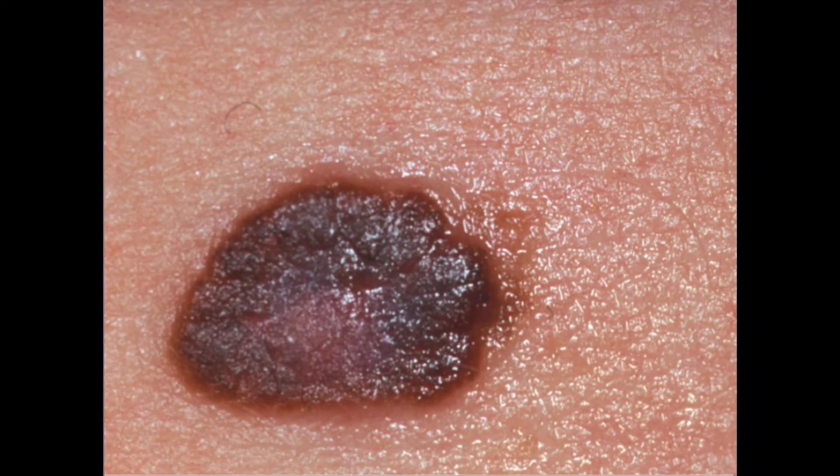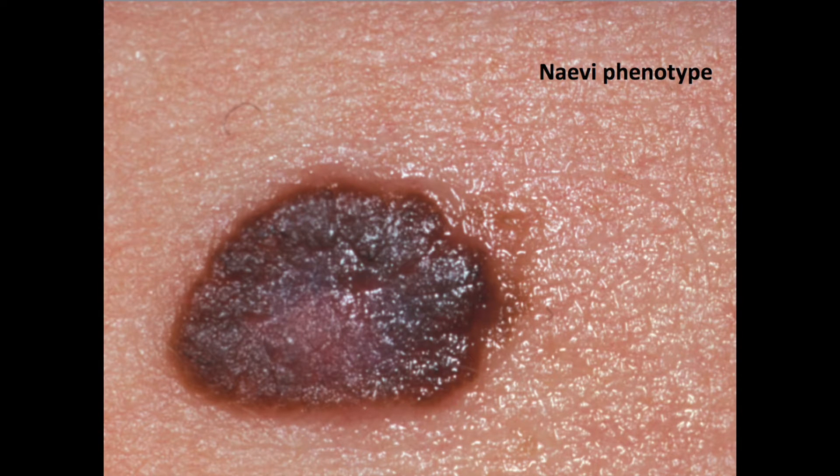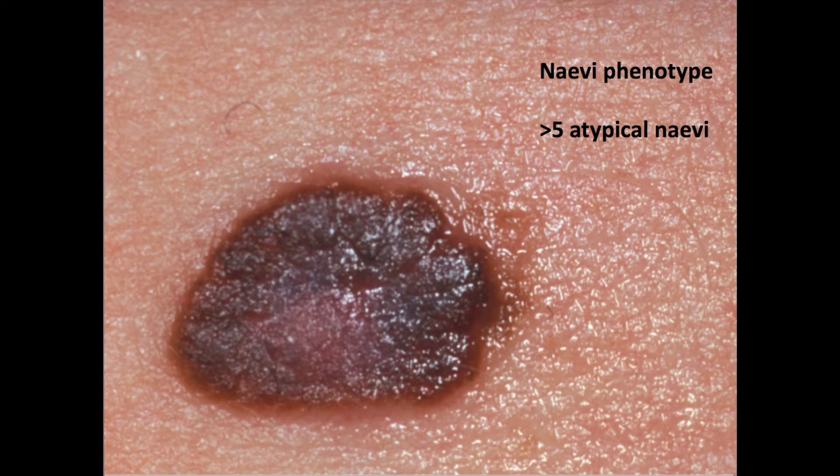Moles or nevi are often precursors of melanoma. However, not every nevus develops into a melanoma. Risk factors for this malignant transformation are: a nevi phenotype, which means having over 100 moles, more than 5 atypical nevi.